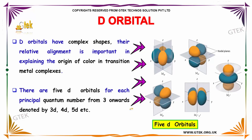These are denoted by 3d, 4d, and 5d, etc. The 5 different d-orbitals are: dxy, dxz, dyz, dx²-y², and dz². These are the 5 different d-orbitals.